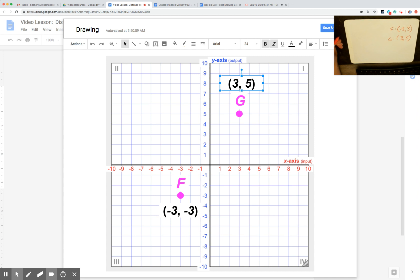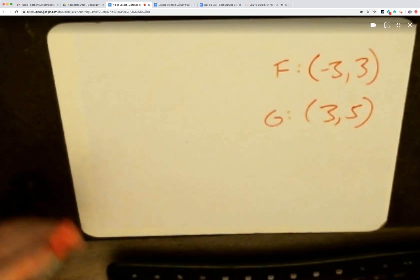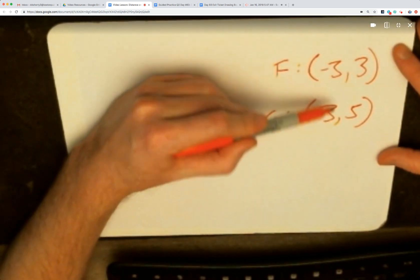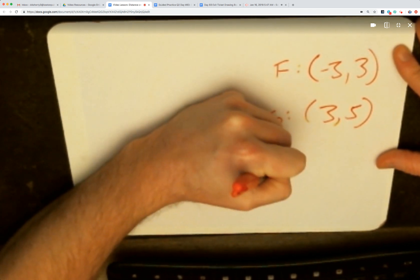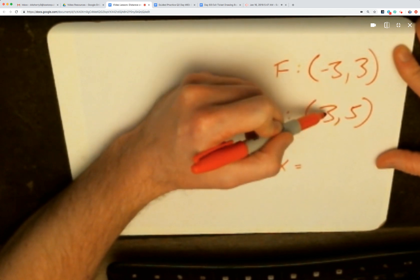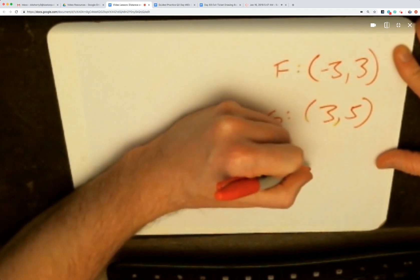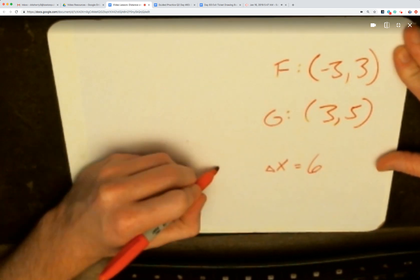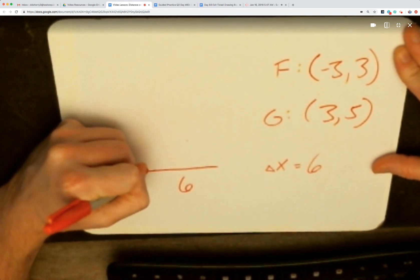So let's full screen this whiteboard quick. To get from -3 to +3, the X is going to change 3 to get to 0, 3 more to get to +3. 3 and 3 gives us 6, so that sideways movement has to be 6 to get from F to G.